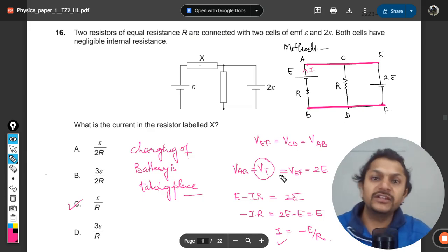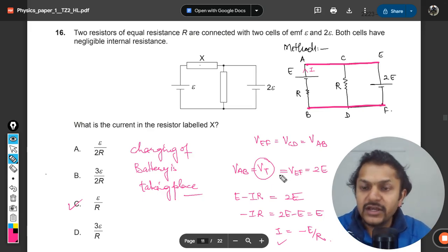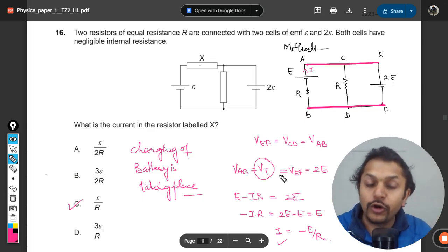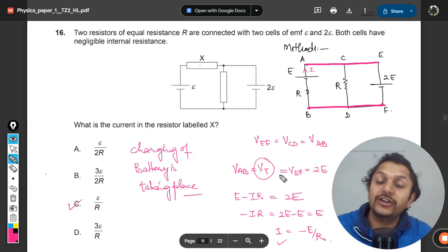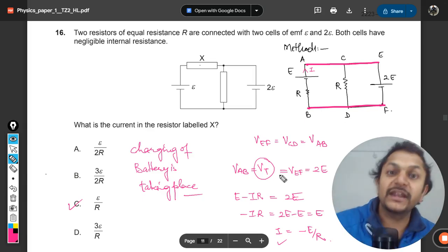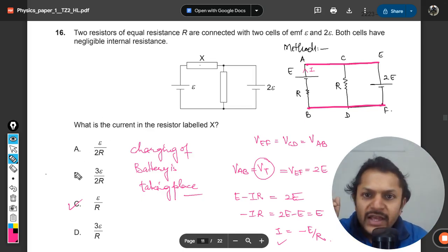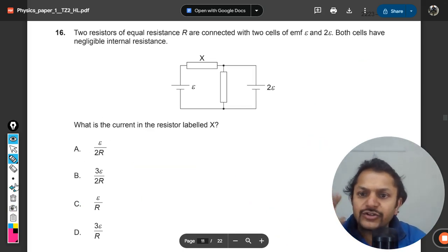It means e by r is the correct answer, and charging of the battery is taking place. If you do not want to use this method, the only method left is Kirchhoff's law. After this method I'll provide you with the Kirchhoff's law approach, so interested students can continue watching.